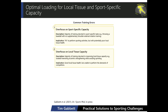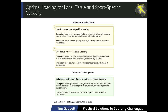Equally, if we over-focus on local tissue capacity — where the majority of training is devoted to improving just local tissue health, for example isolated hamstring eccentric strengthening without sprinting — the implication is that we'll have good local tissue health but we're unable to perform the demands of competition.